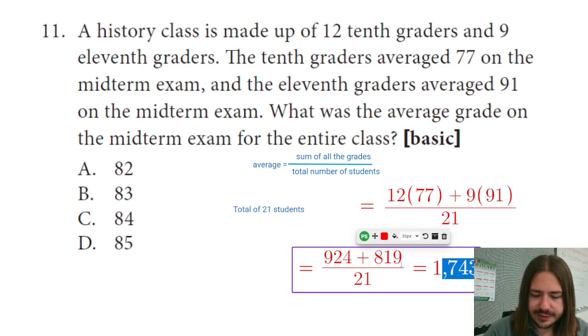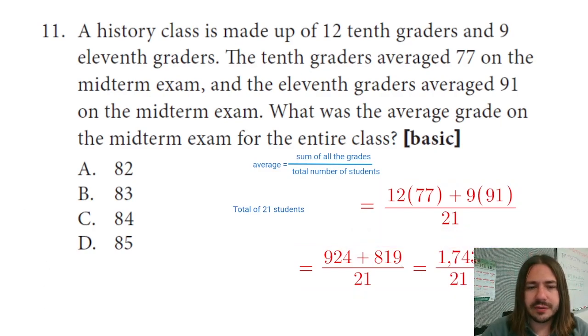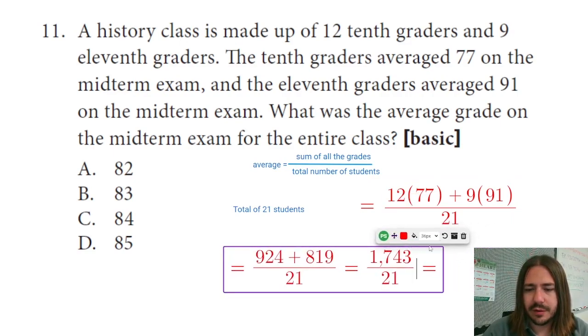All right. Last step here is I'm going to divide that by 21. Again, you could put all this in your calculator at once. Move that over so I'm not in the way here. But I'm going to put this in the calculator now. 1,743 divided by 21 is going to give me 83.